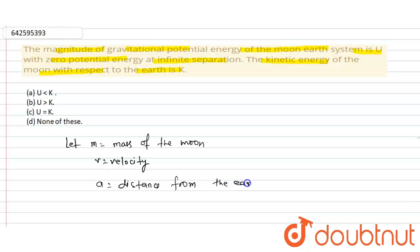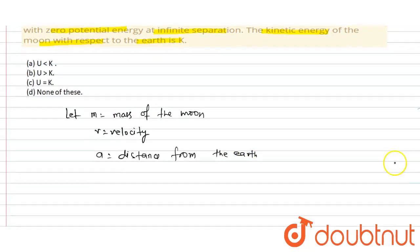We know that v² = GM/a. And we know that kinetic energy KE = ½mv². Putting the value of v², we get ½m × GM/a.